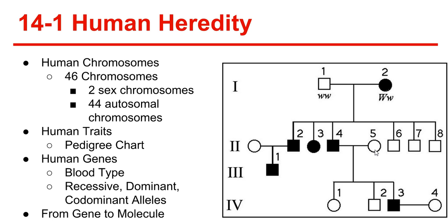Sickle cell disease is characterized by a bent and twisted shape of the red blood cells, and they tend to get stuck in the thinner capillaries. Hemoglobin is the protein in the red blood cells that carries oxygen. In the process of making hemoglobin, if one DNA base is changed, the hemoglobin does not carry oxygen and the result is sickle cell disease. Whether an allele is dominant or recessive depends on the nature of the gene's protein product and its role in the cell.